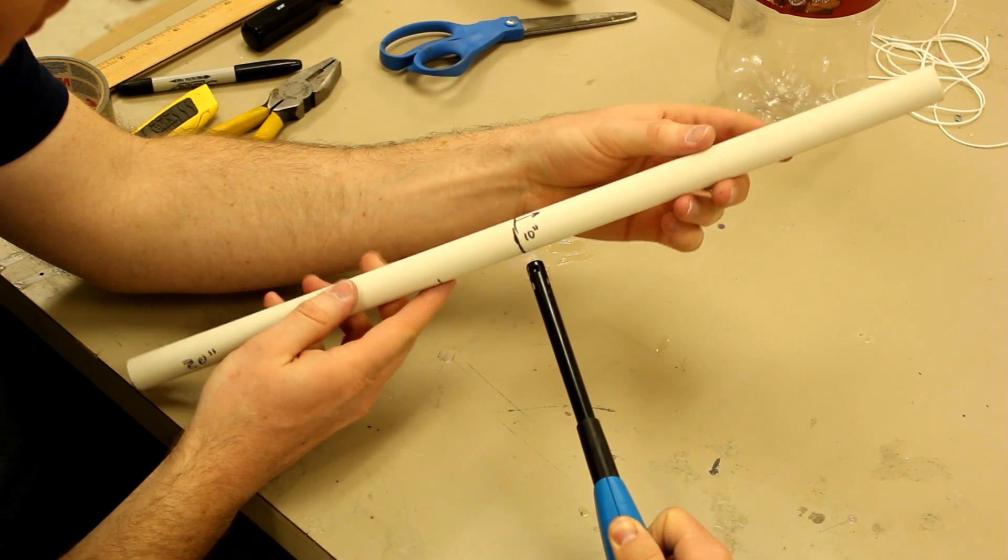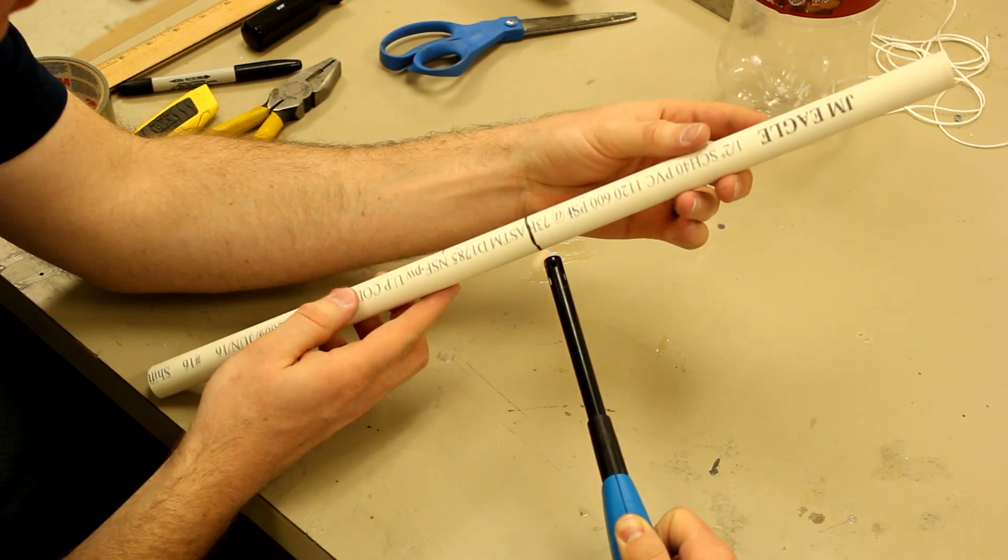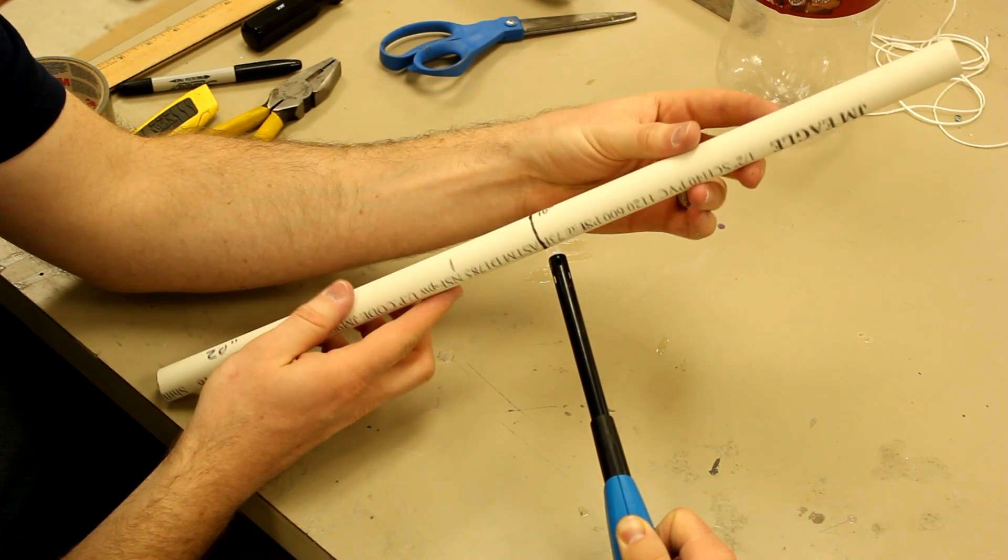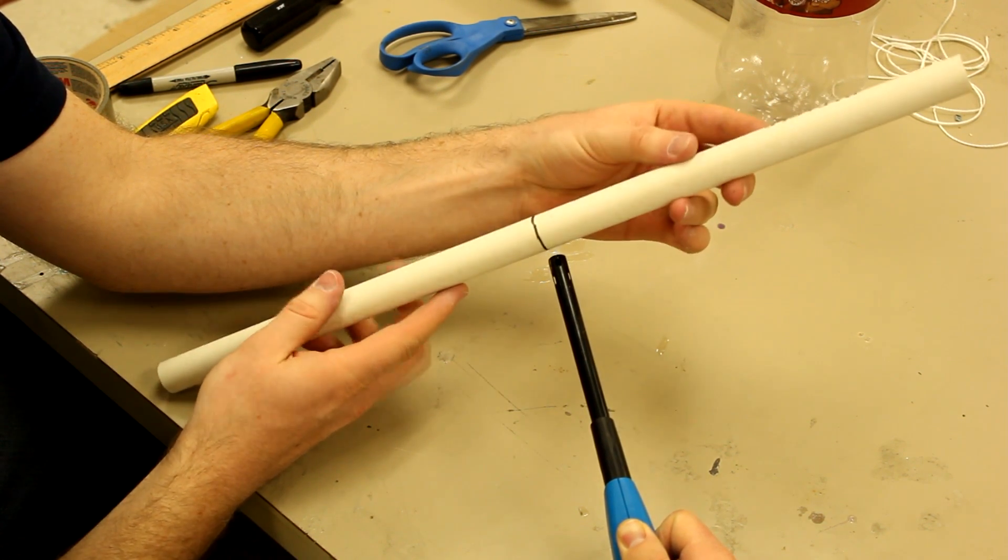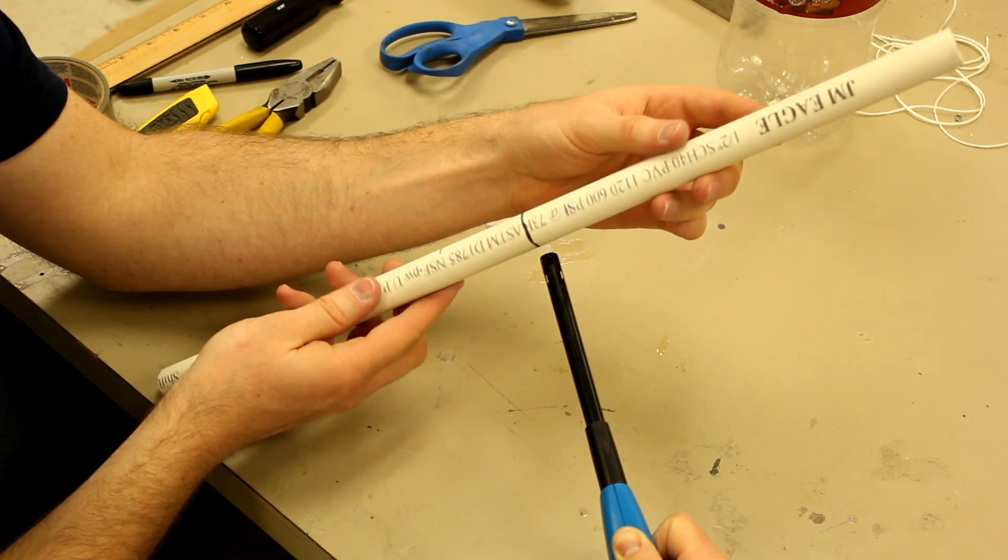You want to be patient and keep rotating this as we heat it up. You need the entire circumference to be warm. That'll make the PVC pliable. We've got that reference line at 10 inches so that we know we're in the right spot.